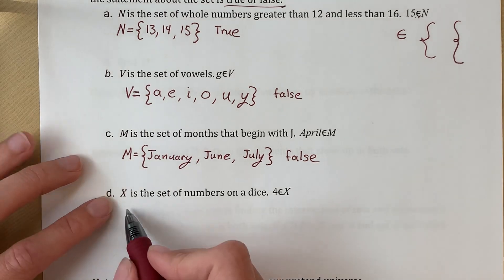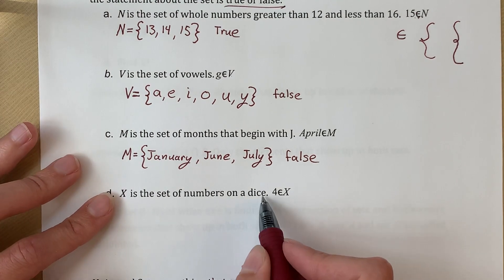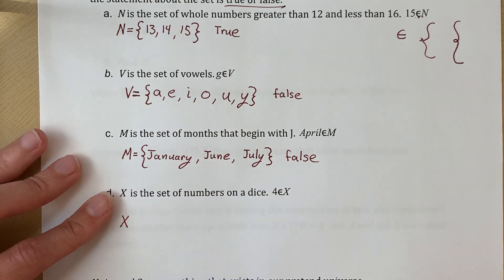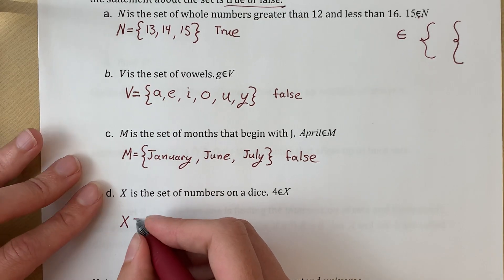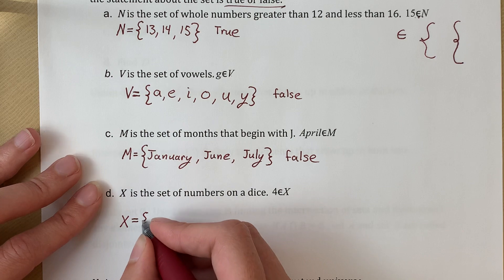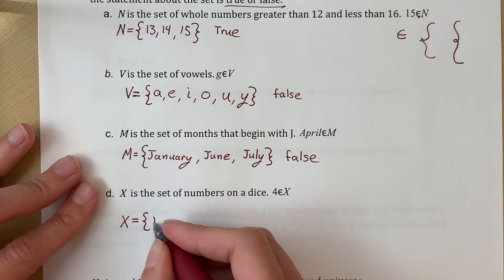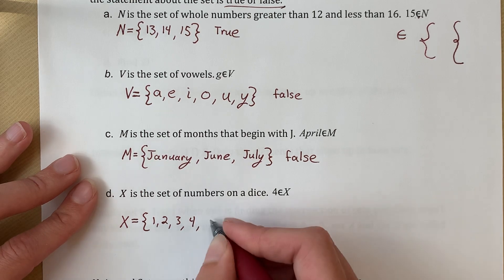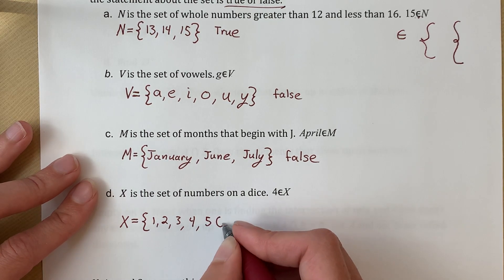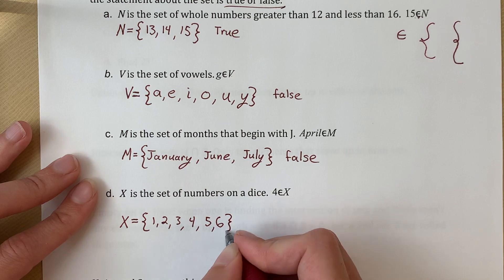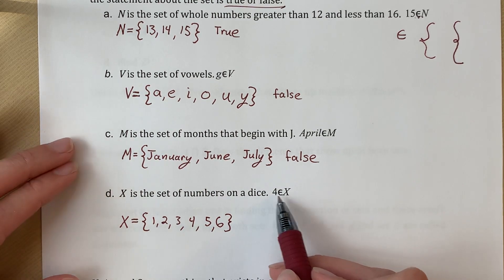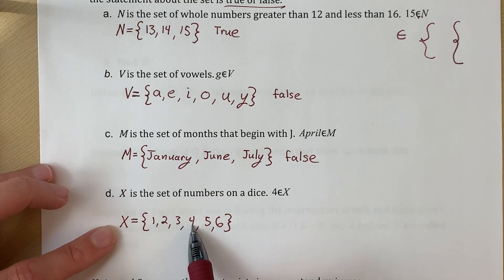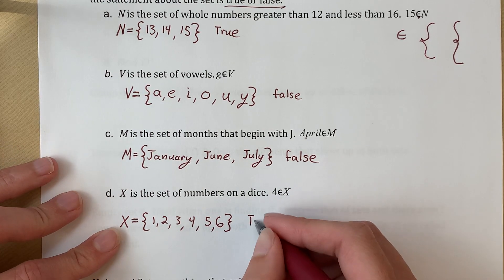And lastly here, we have X is the set of numbers on a dice. I should have written a regular dice, but X equals the set of numbers on a dice. So 1, 2, 3, 4, 5, and 6. And then our question is, is 4 an element of X? Is 4 an element? It is. It is part of the group. So we write true.